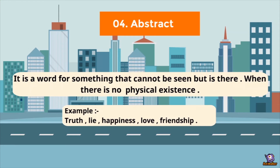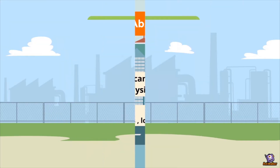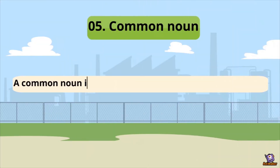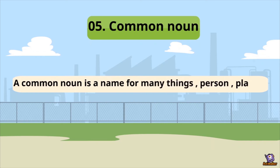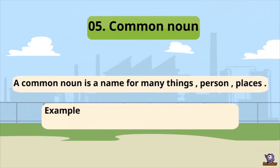Then we have common noun. A common noun is a name for many things, places, and persons. It is like common — naam hi suggest kar raha hai ki bahut hi common thing hai, chahe woh naam place ka ho, thing ka ho, animal ka ho, ya person ka ho. Example: country — a country is a very common thing; we use 'country' for every nation. City, state, etc.